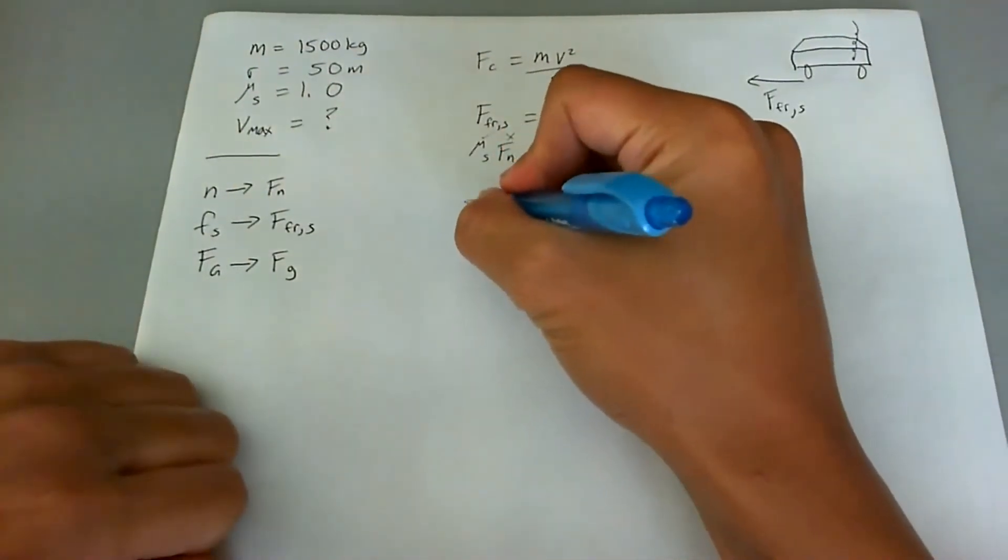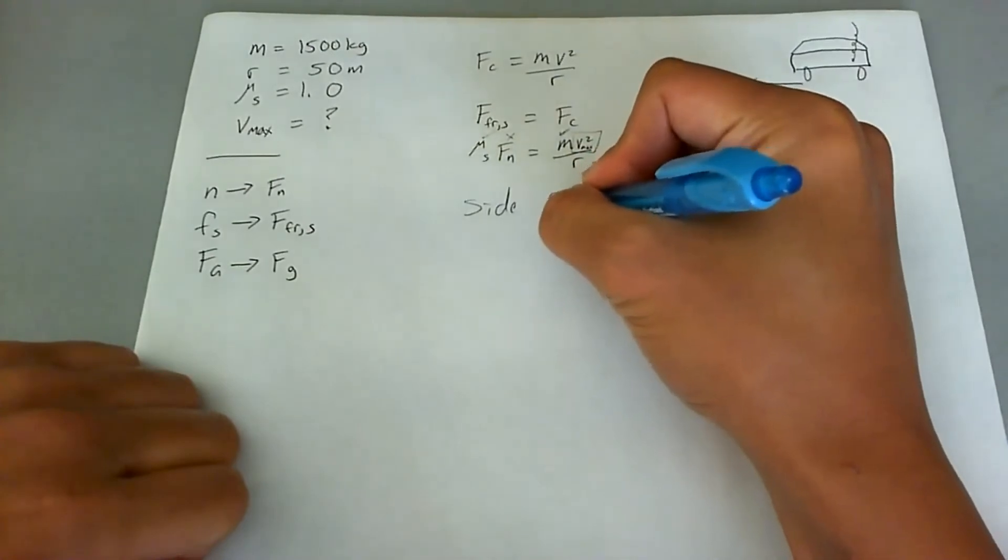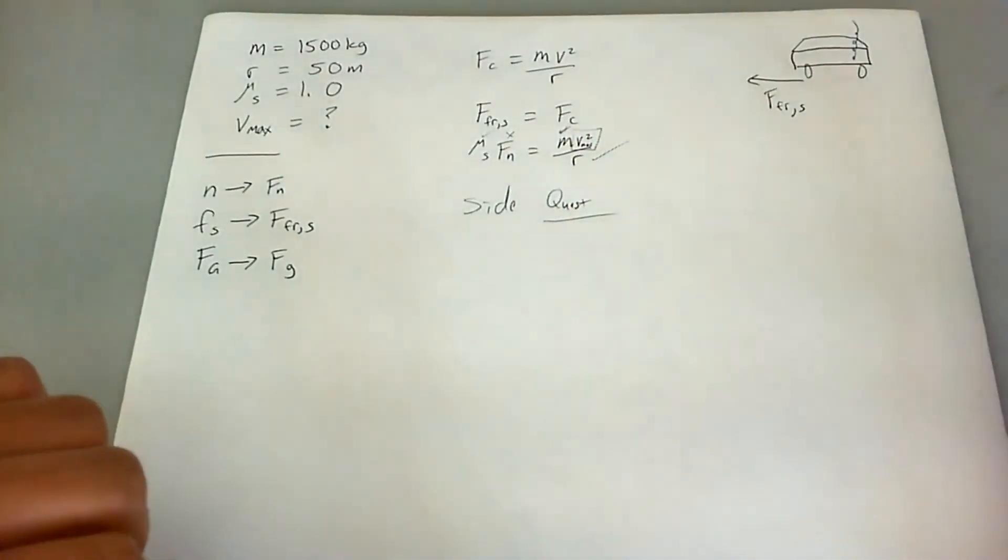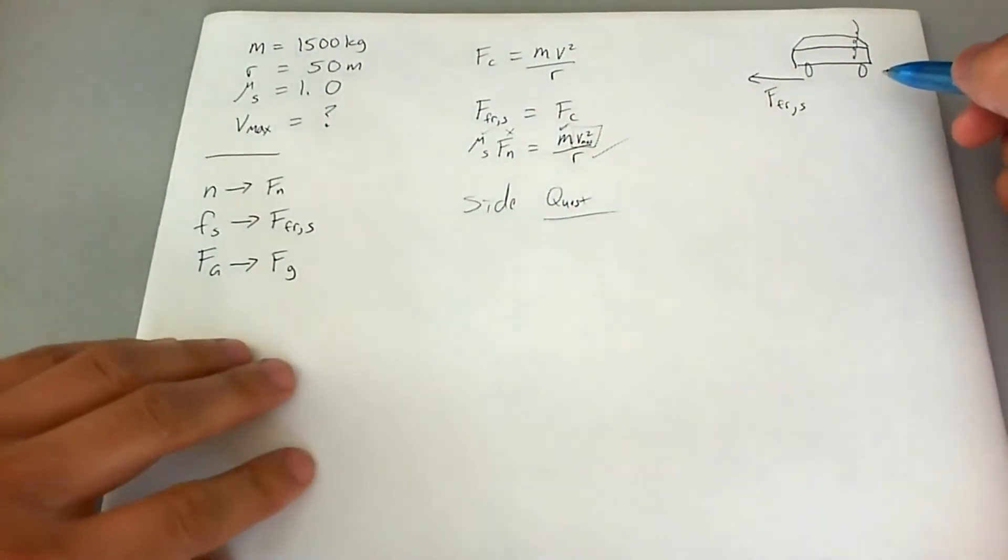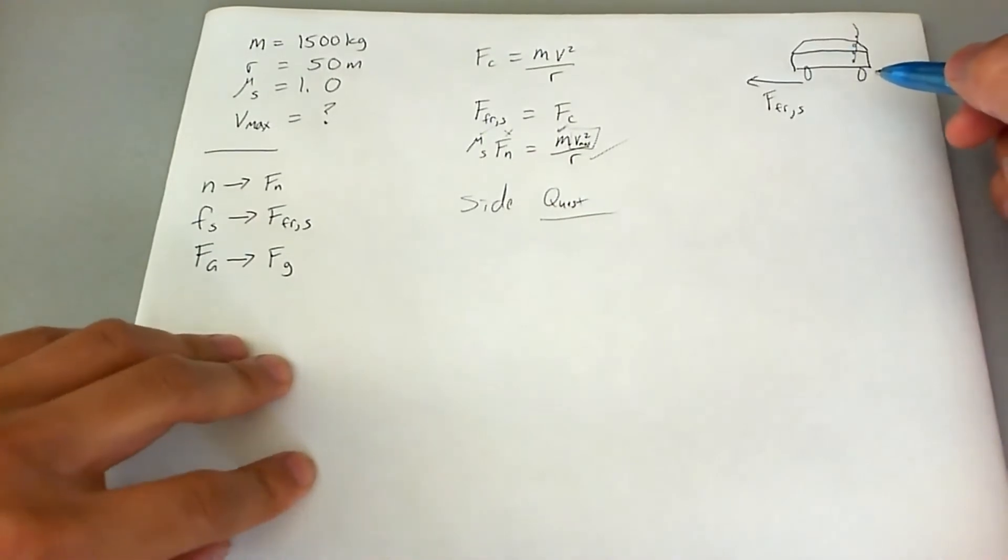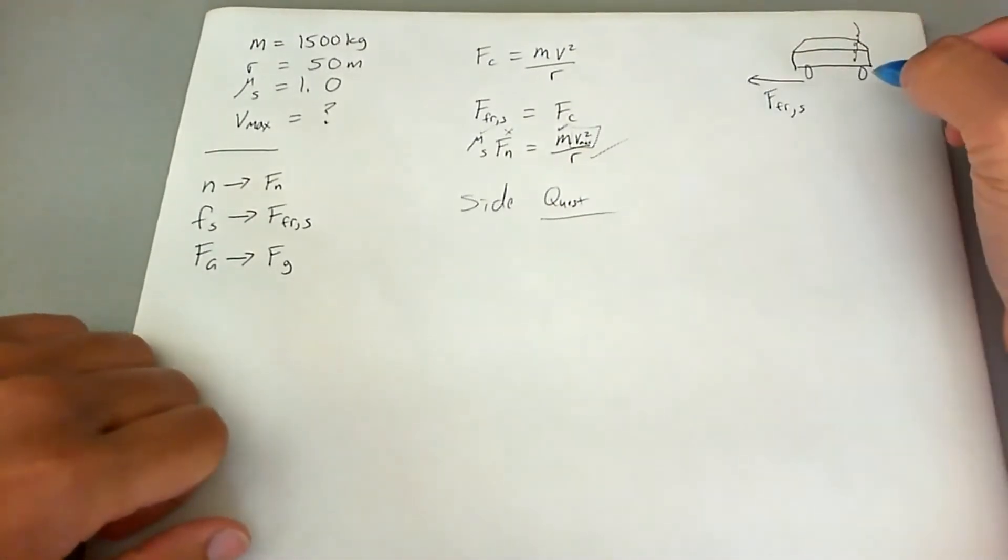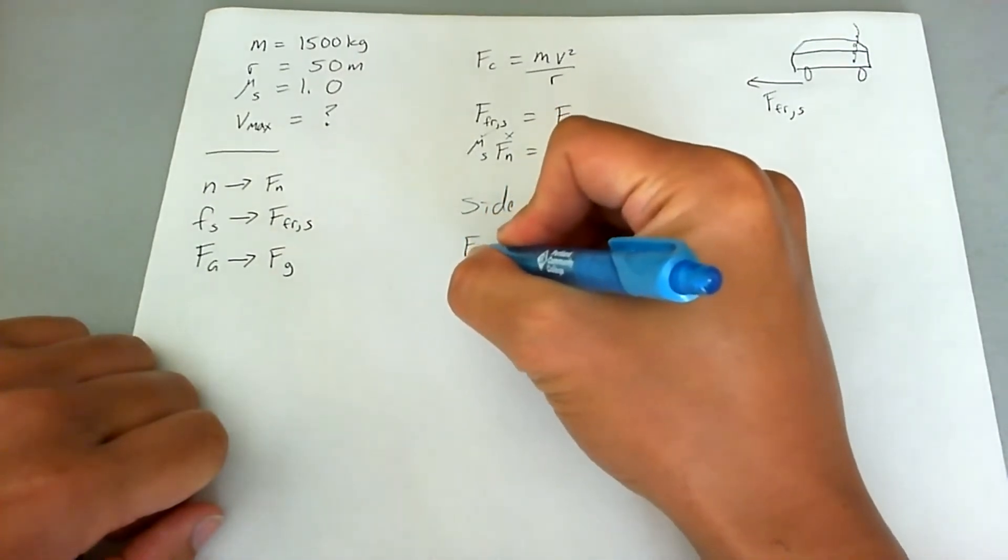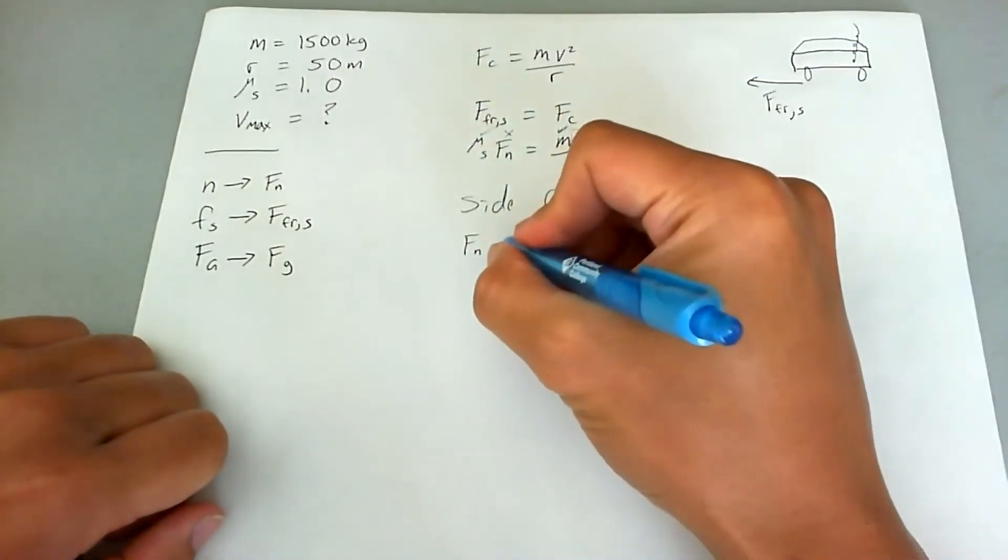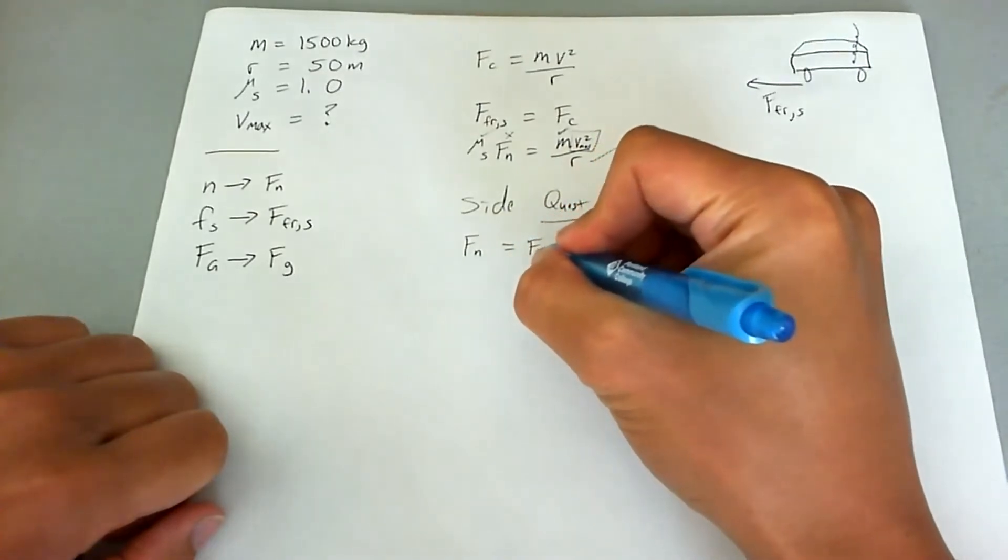And just something that we need to know, and this might be a review. Basically, for any object that is on flat ground and they're not accelerating up or down, we automatically know from Newton's second law in the y direction that normal force is going to equal to the gravitational force acting on the car.